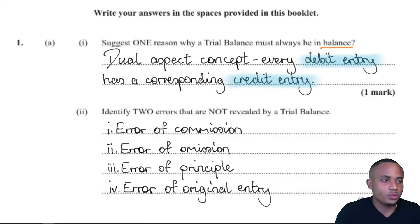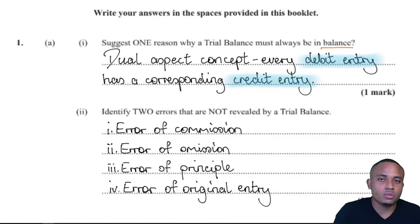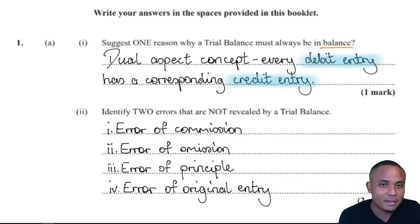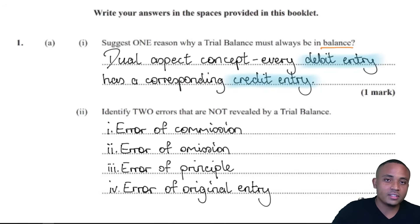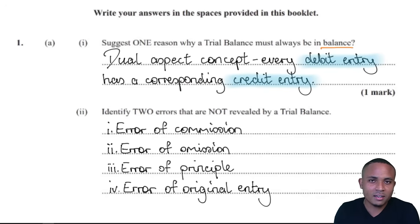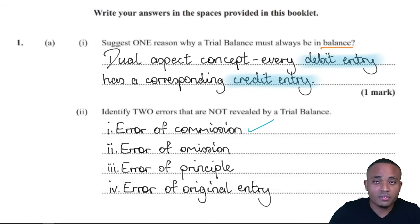They ask for two, but here at the Student Hub we regularly give students extra value, so we'll give you all four and you can pick whichever two. We must identify the two errors not revealed by the trial balance. There are four listed here. I'll go through each one so you understand how a trial balance can balance while the errors remain unseen. The first one is the error of commission.